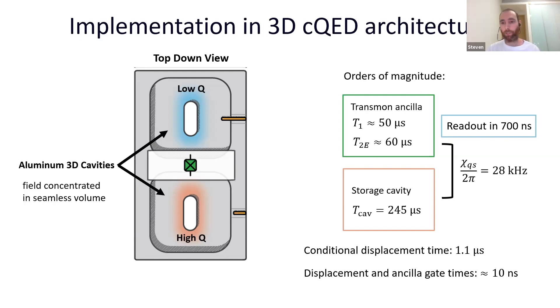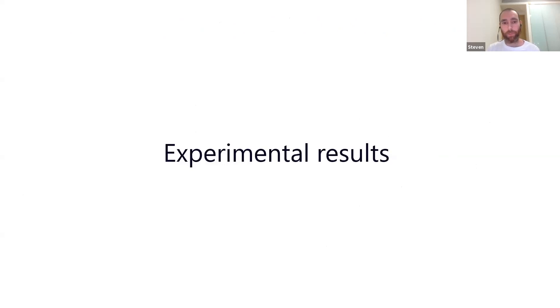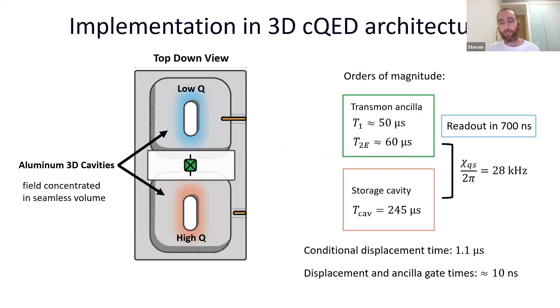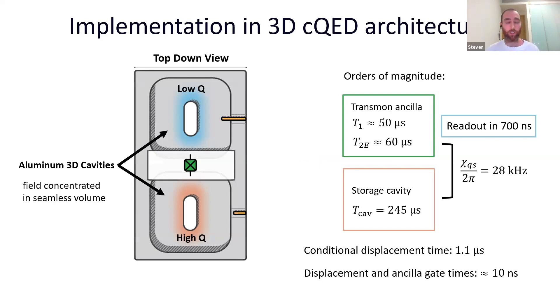This architecture is not a strict requirement — it's what we use at Yale because it's our usual platform, but anything that has a two-level system coupled to an oscillator can implement the same protocol. It can be done in trapped ions, cold atoms, and many other platforms. Additionally, these large 3D cavities are not a prerequisite: they can be miniaturized, and 2D-defined cavities can also be used.